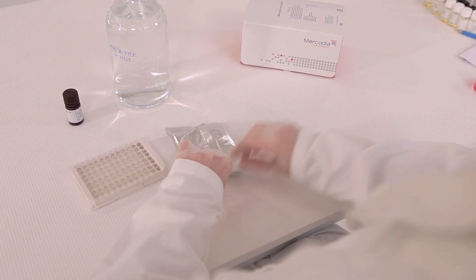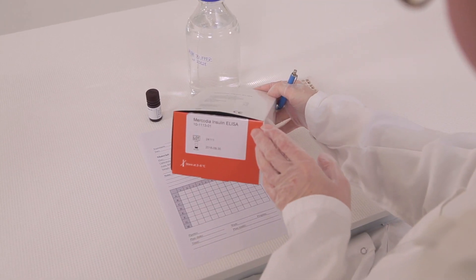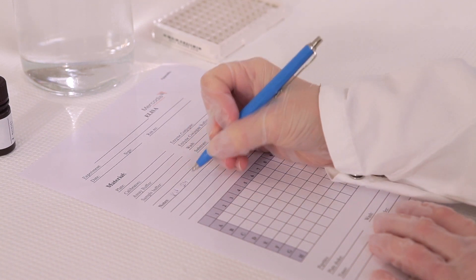It is useful to have a worksheet to plan and record details about your run. Note the lot number for the kit and designate wells for the calibrators, controls, and samples.